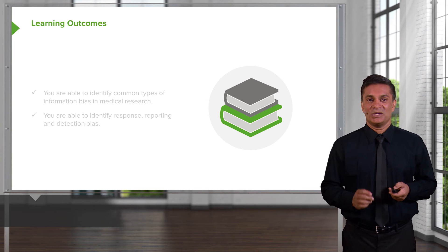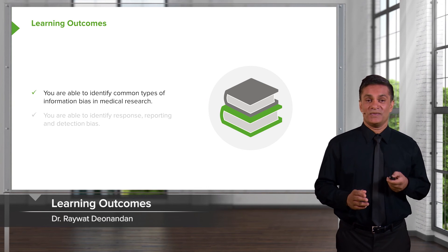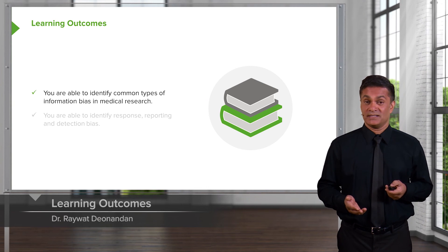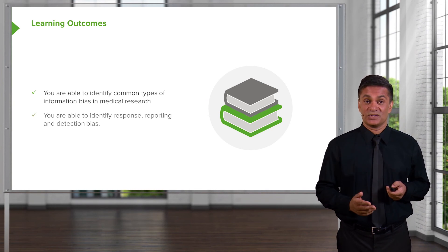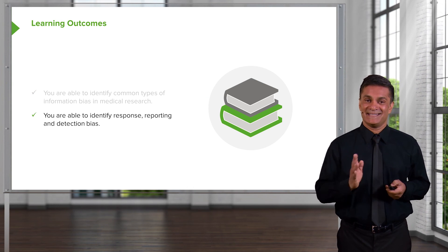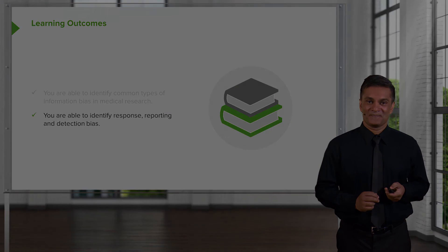So, what have you learned? You have learned what the typical kinds of information biases are in epidemiological medical research, and you're now able to identify response, reporting, and detection bias. Thank you.